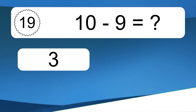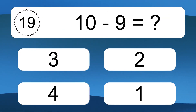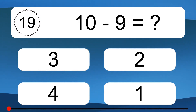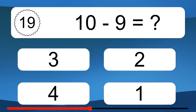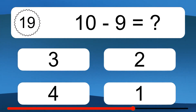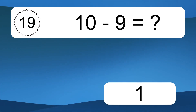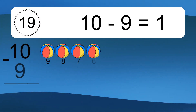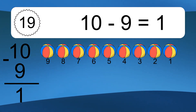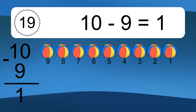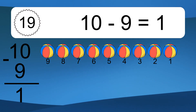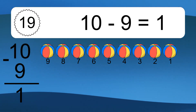10 minus 9 equals what? 10 minus 9 equals 1. Let's count it: 9, 8, 7, 6, 5, 4, 3, 2, 1.